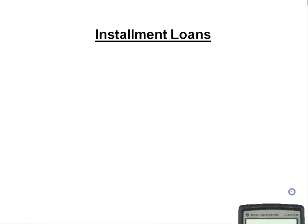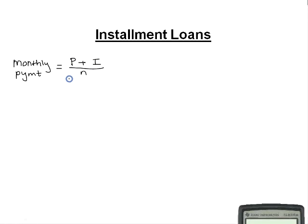If you buy a big-ticket item and agree to pay it off in a fixed number of payments, you have an installment loan. The store will charge you interest. If the store uses the add-on interest method to determine your monthly payments, the store uses the formula: your monthly payment is equal to P plus I over N, where N is the total number of monthly payments.